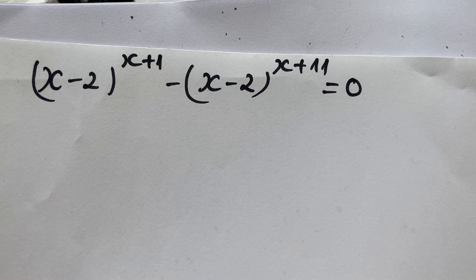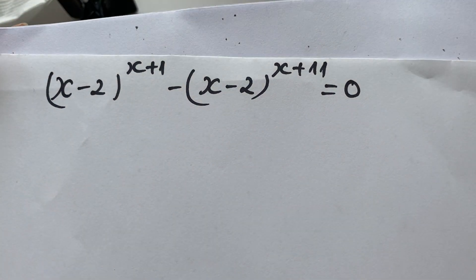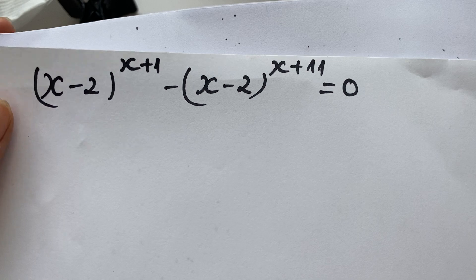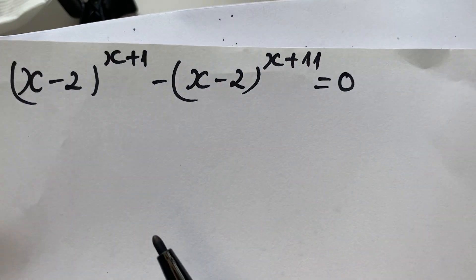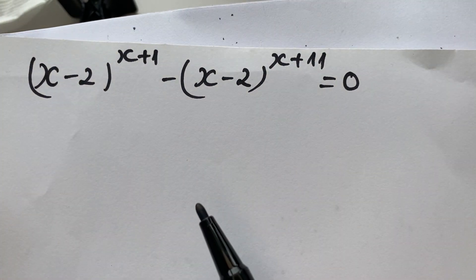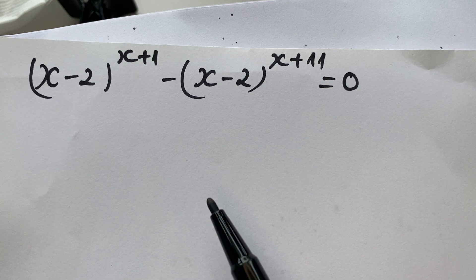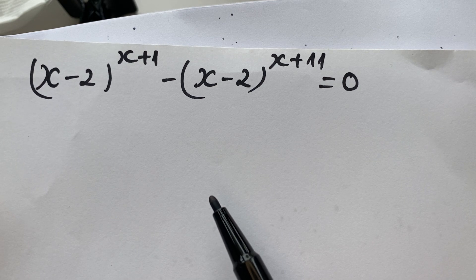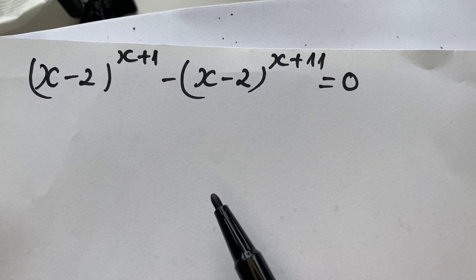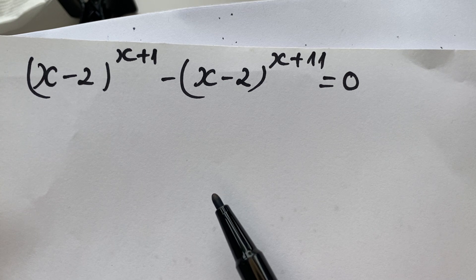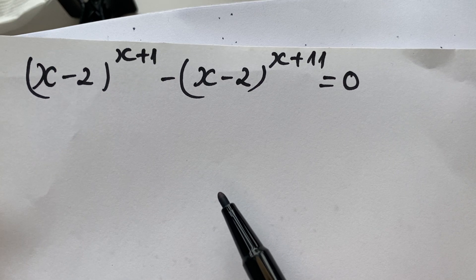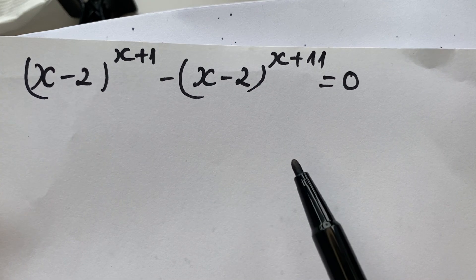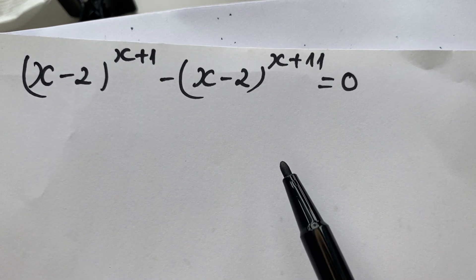Hello everyone! How to find the value of x from the equation: (x minus 2) to the power (x plus 1) minus (x minus 2) to the power (x plus 11) equals 0. So, how do you solve this to find the values of x in this equation?